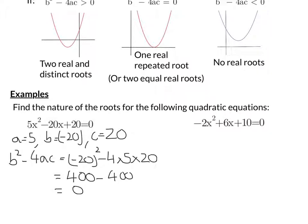400 take away 400 is 0. So in this case, looking up at the top, here it is here, I've got one real repeated root. And I would need to make sure I'd write a comment like I have at the bottom: as b squared minus 4ac is equal to 0, then one real repeated root.